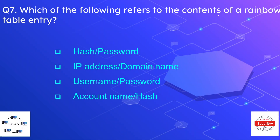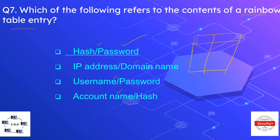Question number seven: which of the following refers to the contents of a rainbow table entry? The options are hash password, IP address, domain name, username password, or account name hash. The correct option is hash, as studied in the last question. The rainbow table contains passwords in one column and their corresponding hashes in another, so each entry is a combination of a password and its hash.